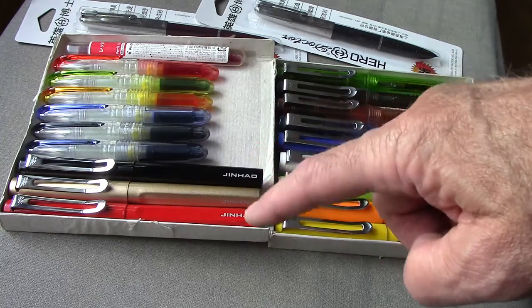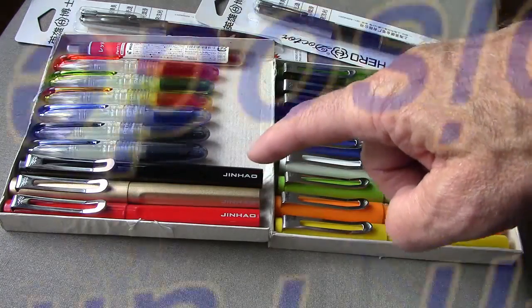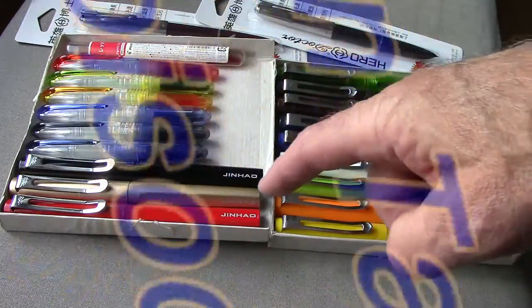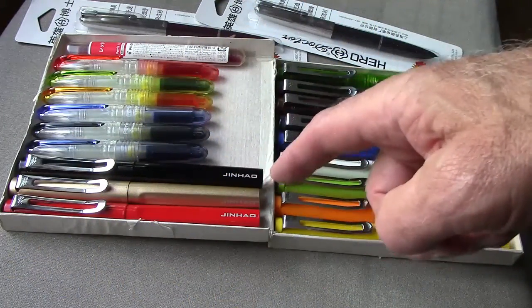We also have three of the metal Jinhao 599s. And the ones I have left are red, kind of like a gold, and a black.